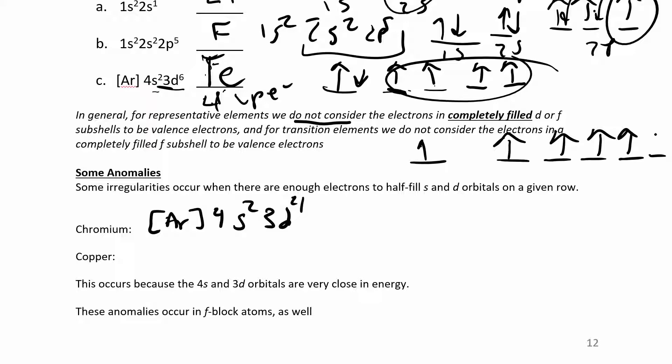But what actually happens is this electron over here actually appears over here. And so the electron configuration really looks like not this one, but it looks like argon and then 4s1, 3d5.